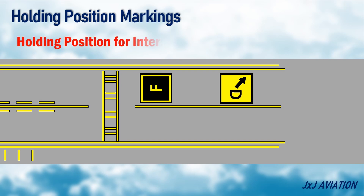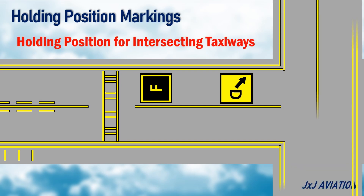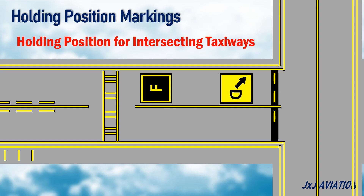Holding position for intersecting taxiways — when two taxiways intersect, a single dashed line marked on the taxiway is the holding position.